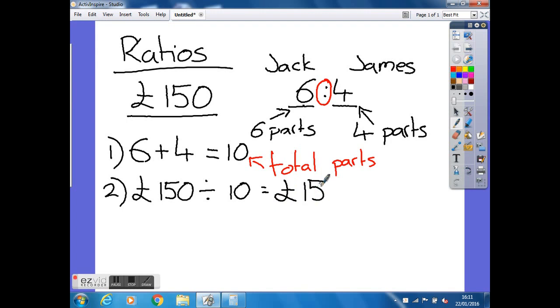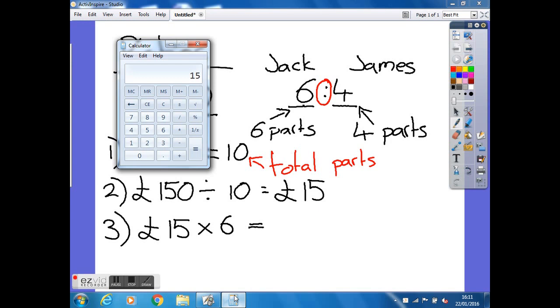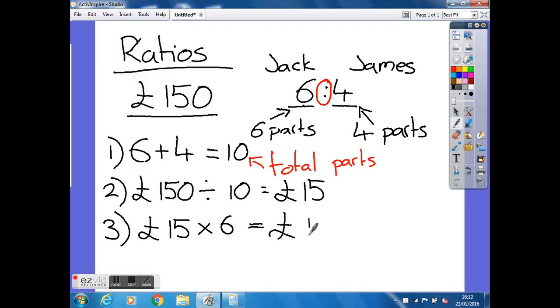So if Jack's after six parts, what do you think we're going to have to do next? What we're going to have to do is multiply our one part by how many parts we're looking for. So in the case of Jack, we're looking for six parts. We've already got the 15 up. Multiply it by six and we get 90. So that shows us straight away how much money Jack is getting, £90 out of the £150.